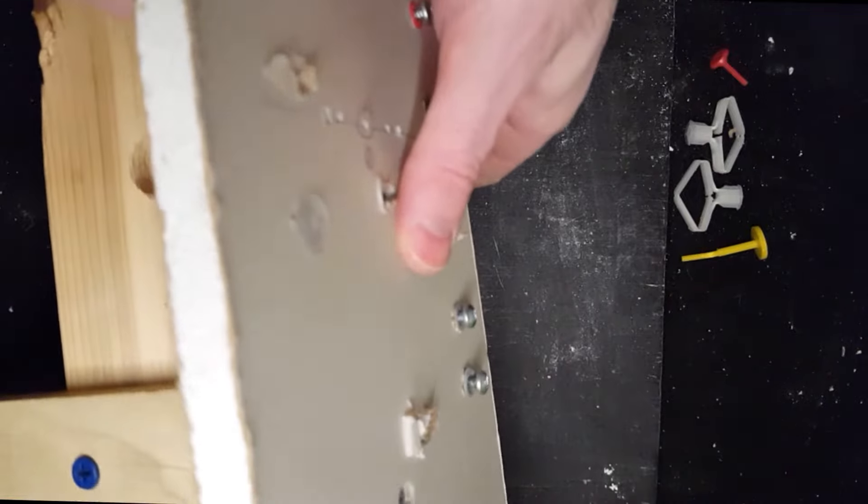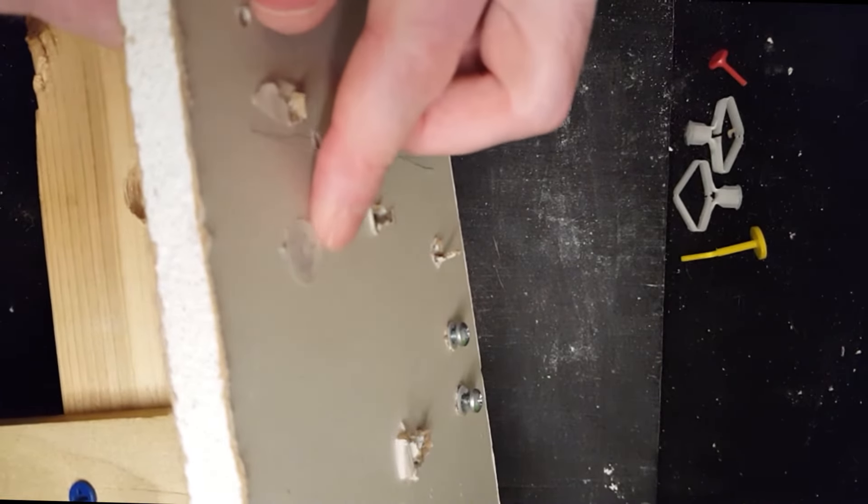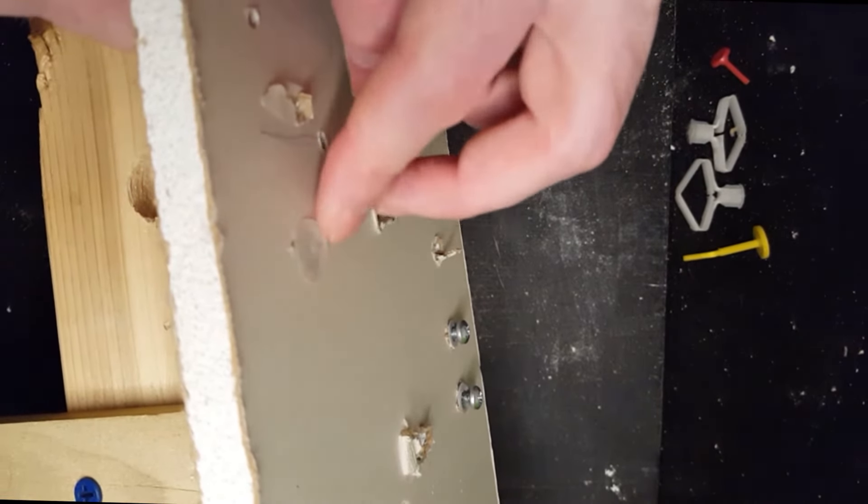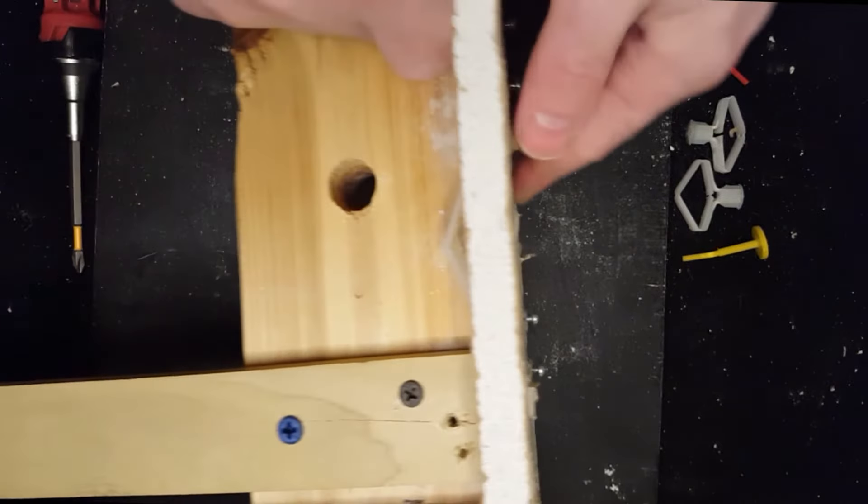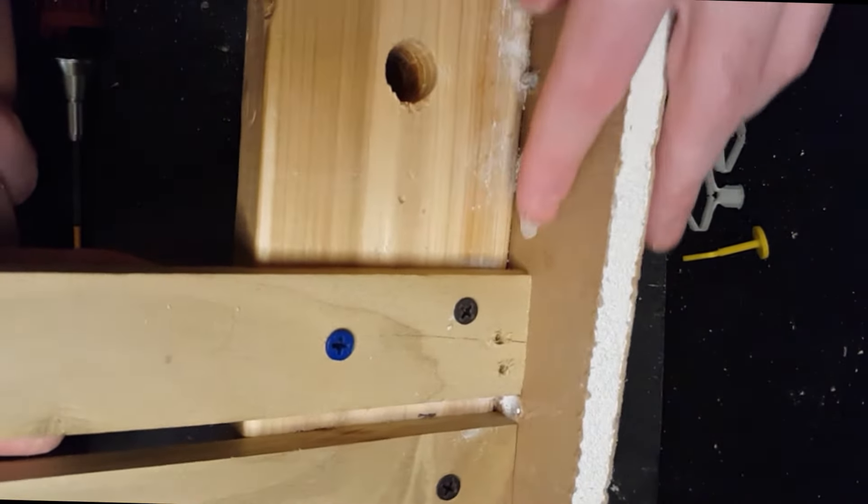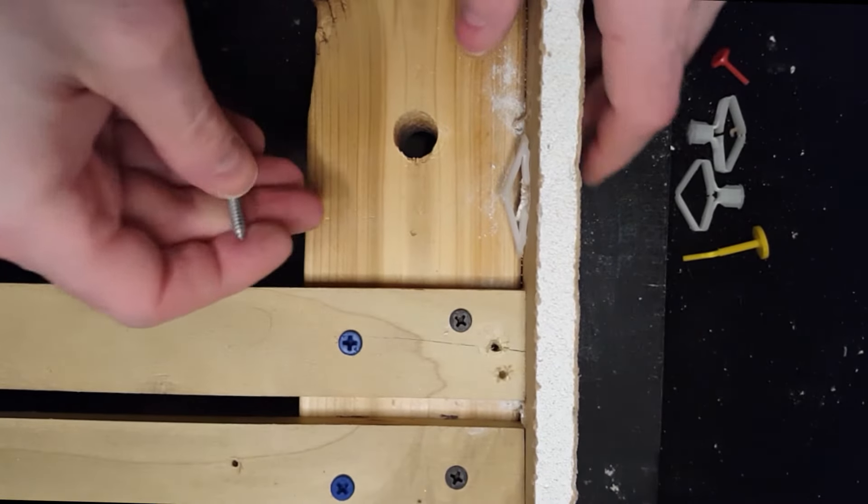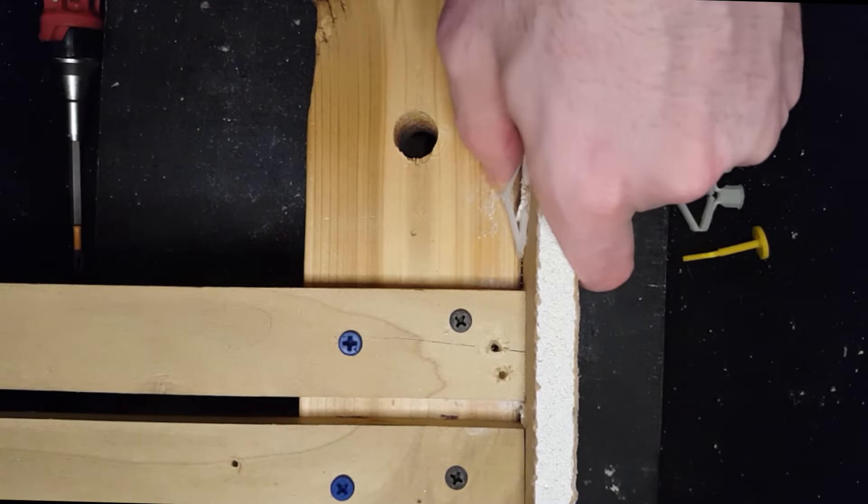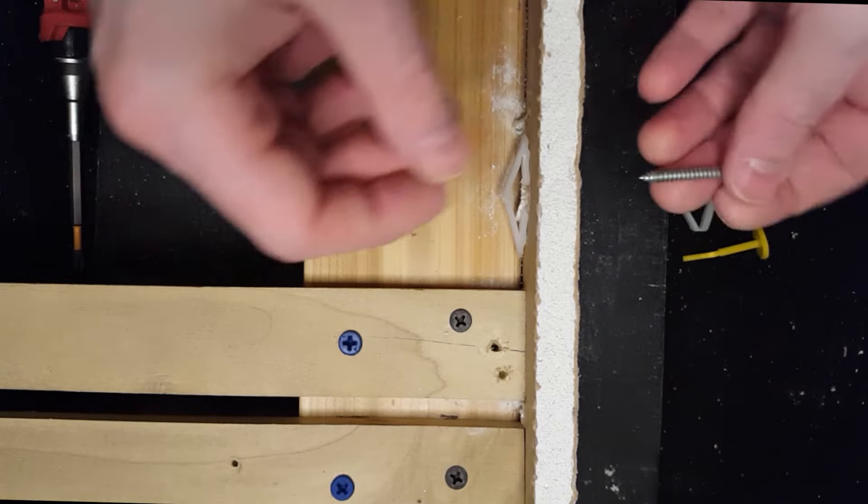So you can see here, the flange is flush with the front of the wall, and the trusses are pretty decently flush against the back of the wall.